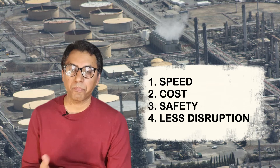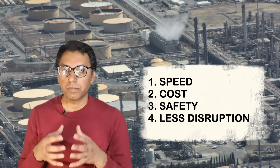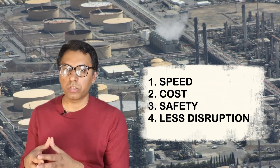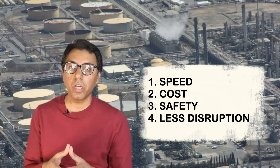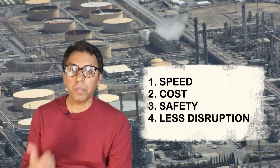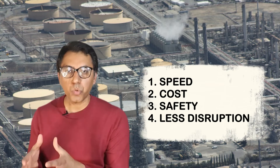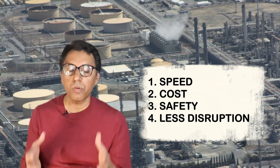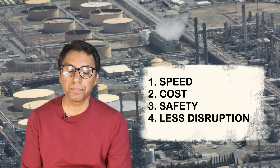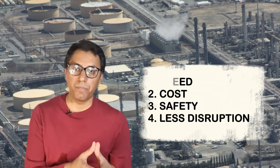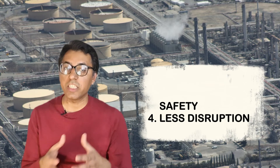The second benefit is cost — prefabrication in a factory setting saves cost in material, labor, and planning, helping to reduce the overall project cost. Number three is safety and control — a controlled environment offers a more predictable and safe working environment for personnel. Number four is less disruption — prefabricated work decreases noise, air pollution, and vehicle movement at site, resulting in less disruption for clients.